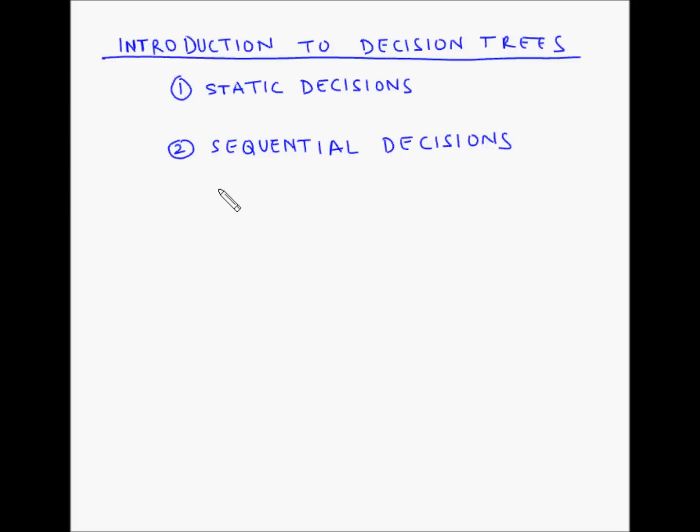These type of problems can be conveniently depicted by means of a decision tree in order to make it easier to solve. Now let us look at how a simple decision tree can be constructed and what is the terminology used in it.